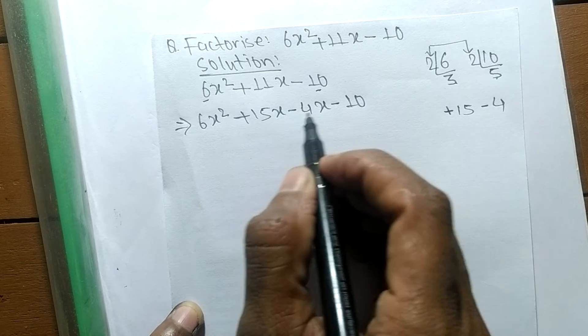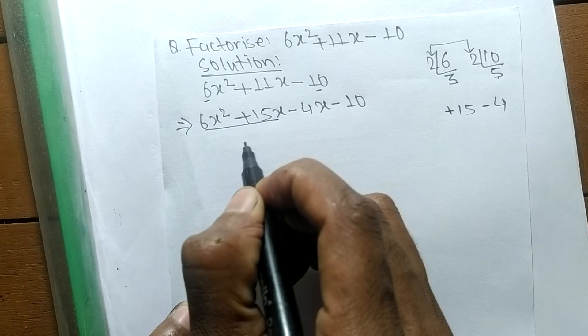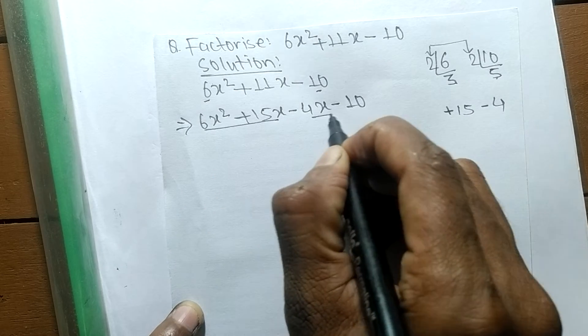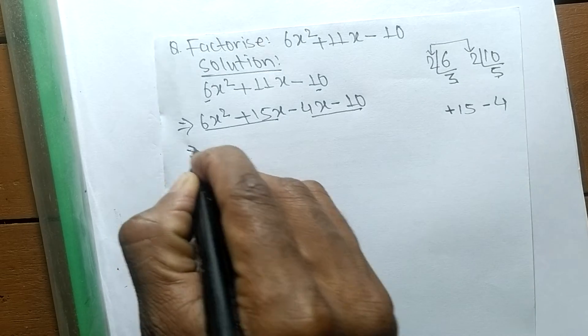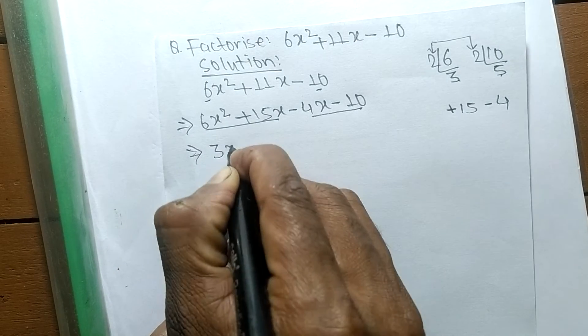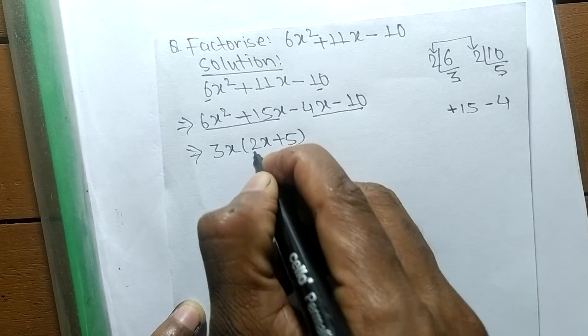Now we have to separate these expressions into two pairs. In the first pair the common is 3x, so the remaining is 2x + 5.